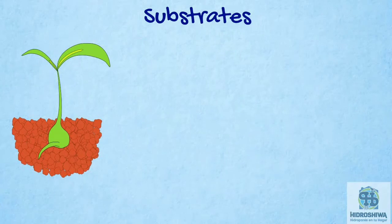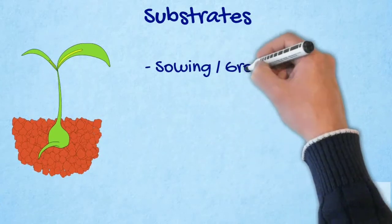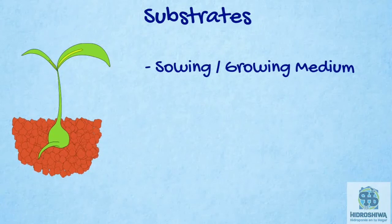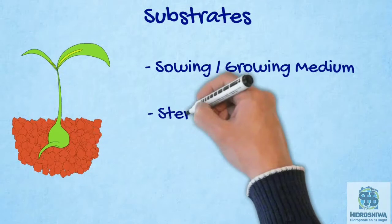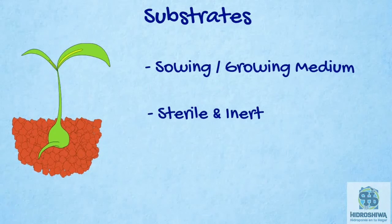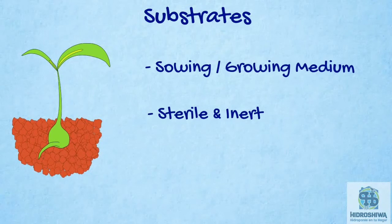The substrate is the physical medium which protects and supports the plant for root development in vegetables and flowers, allowing the nutrient solution to be available for its development. It must be sterile — it must not contain any bacteria or microorganisms whatsoever that could eventually spread or damage the plant. Likewise, it should not contain any element that could alter the nutrient solution. This is the main reason why soil is not used in hydroponic growing.